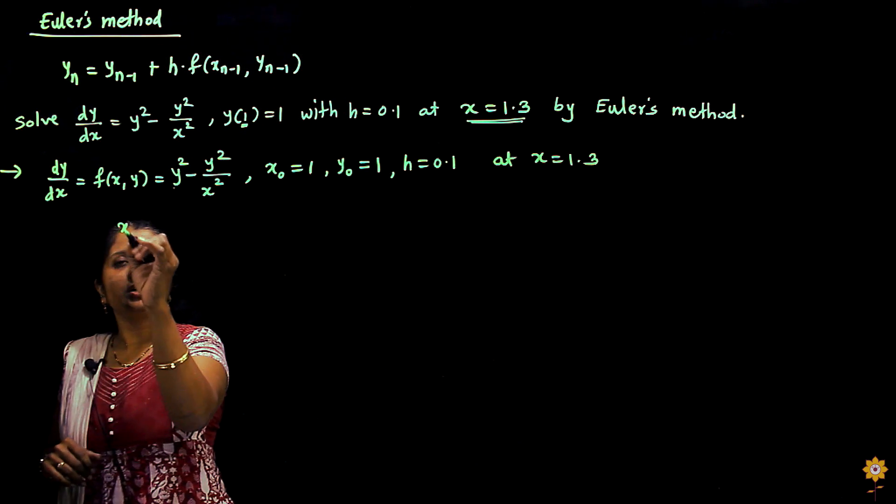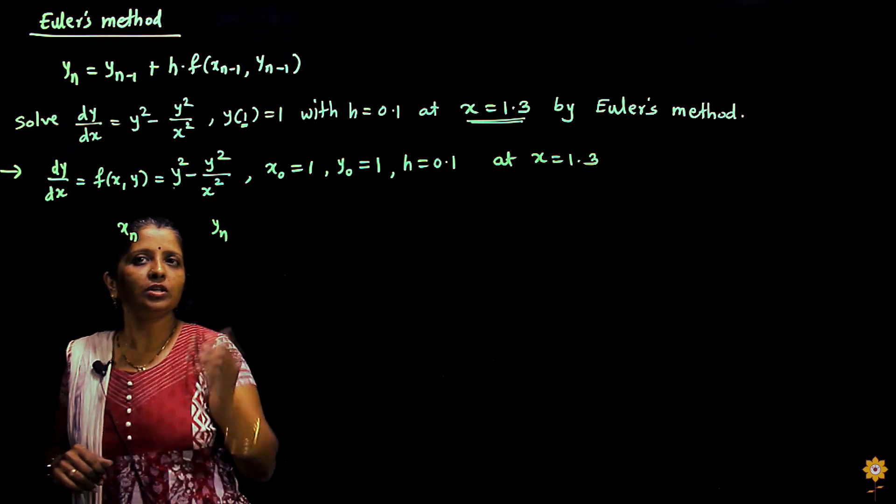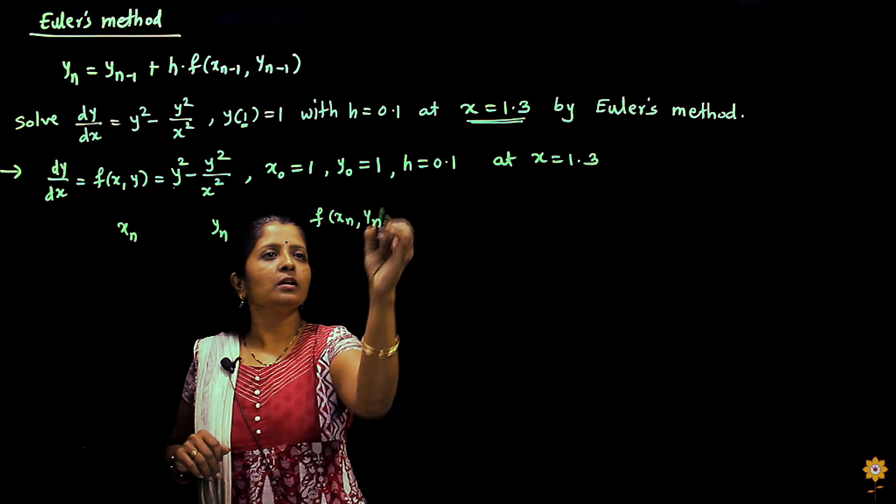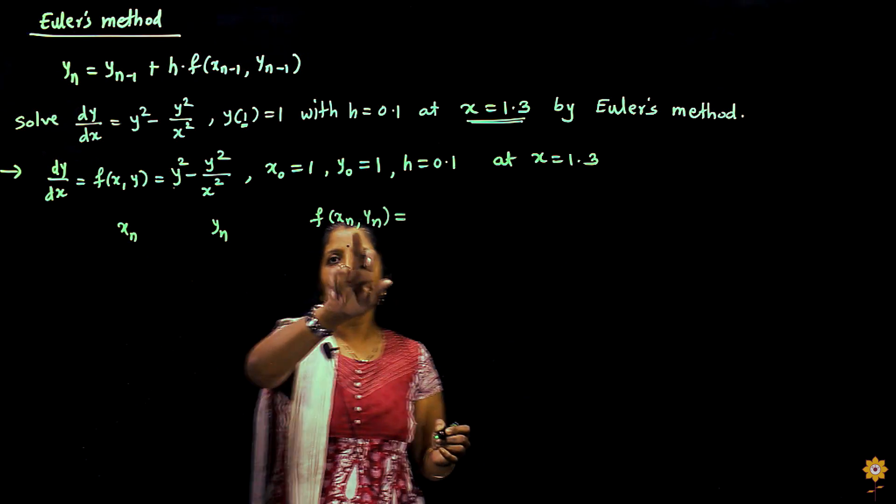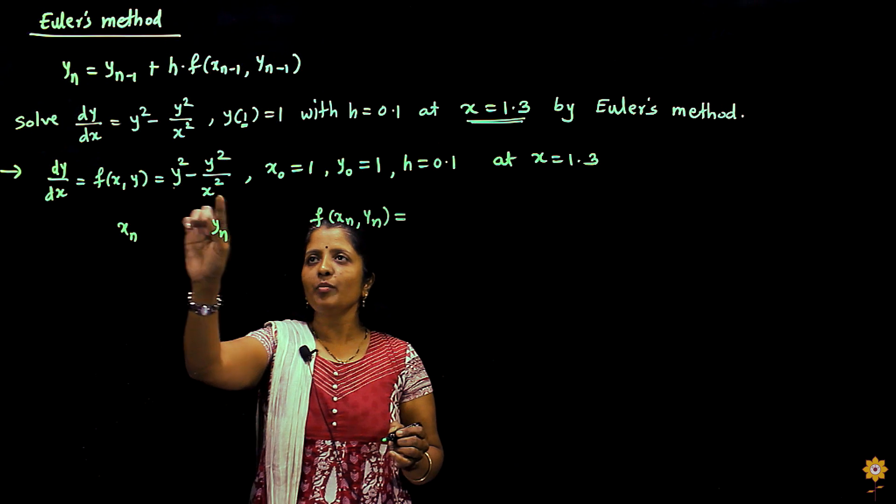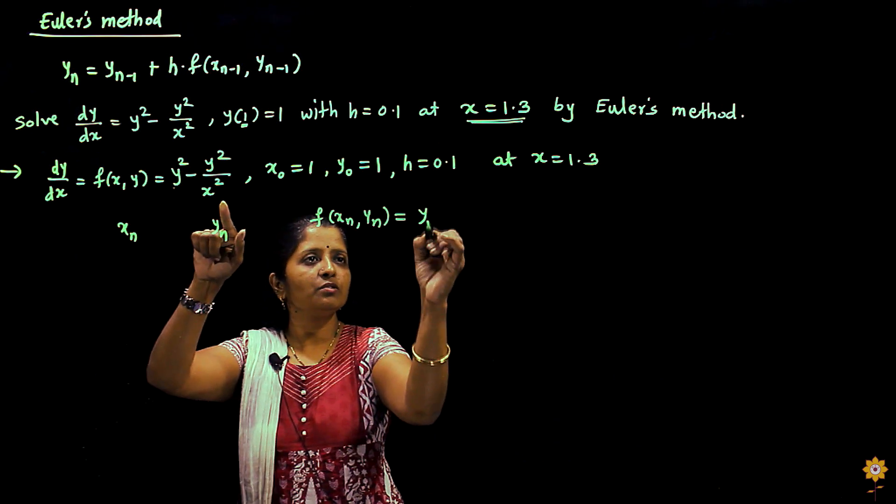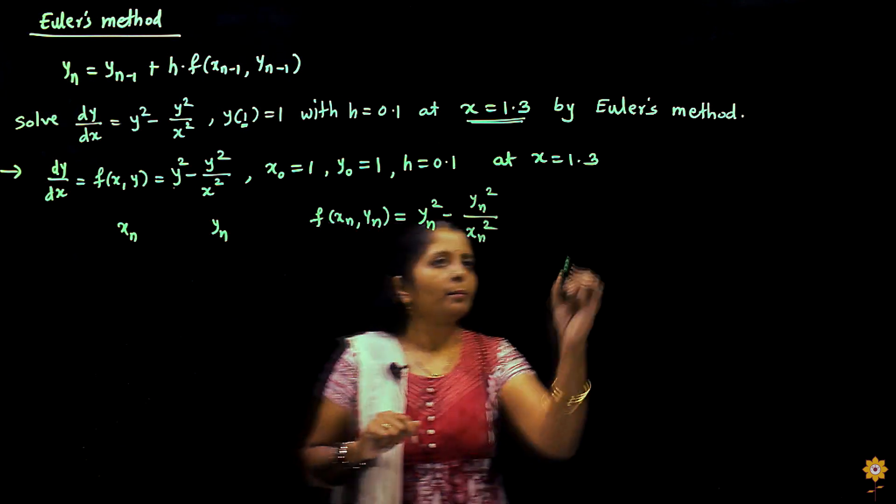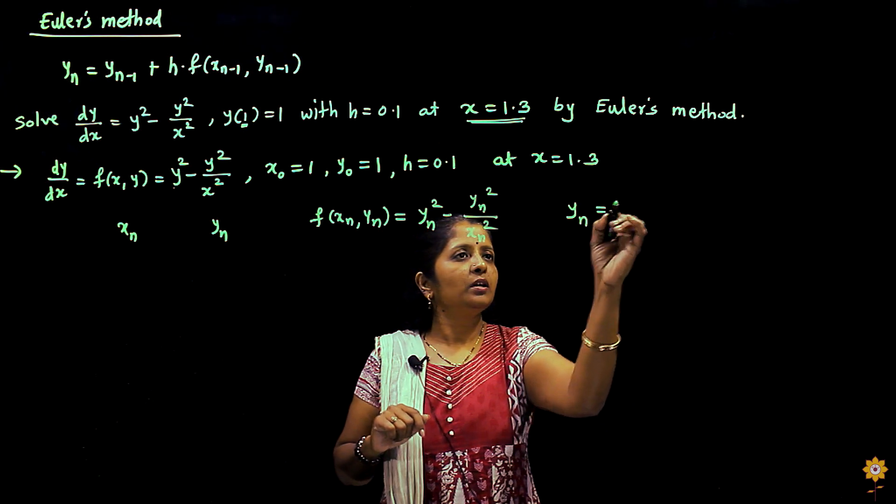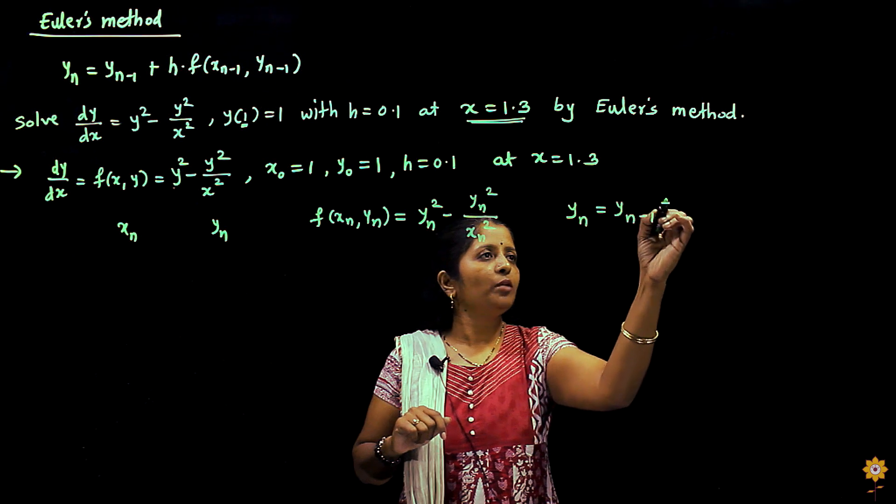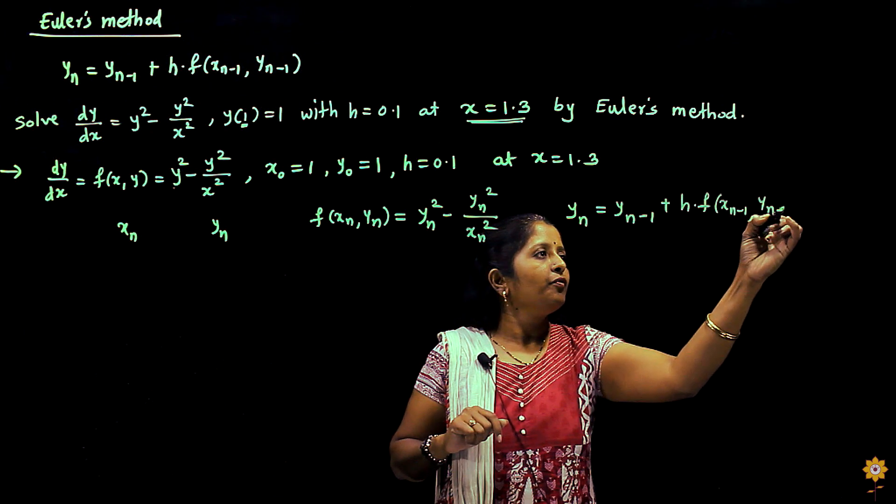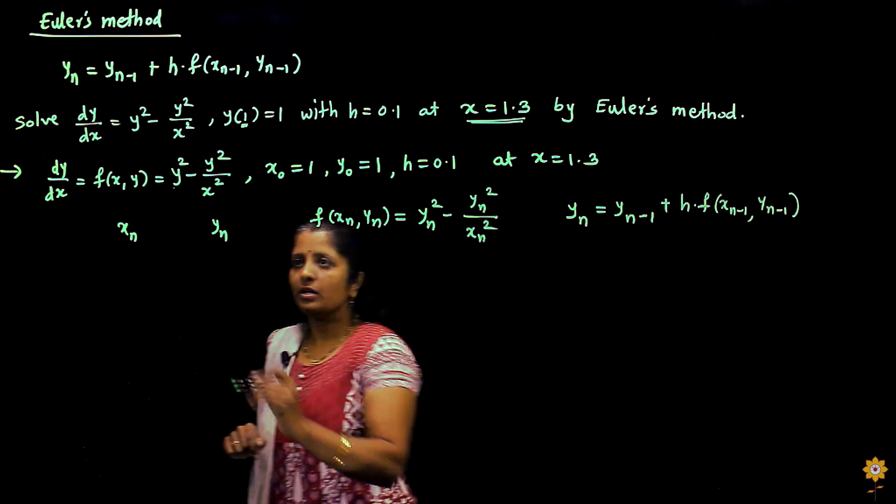Let us start. We will prepare the table for better calculation: xn, yn, f(xn, yn). Now f(xn, yn) over here, f(x,y) is y² minus y²/x². So it is yn² minus yn²/xn², and the formula by Euler's method is yn = yn-1 + h·f(xn-1, yn-1).